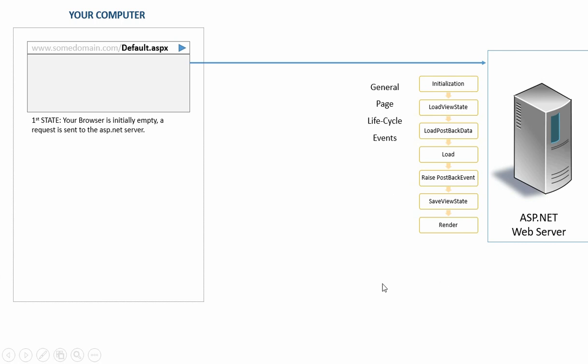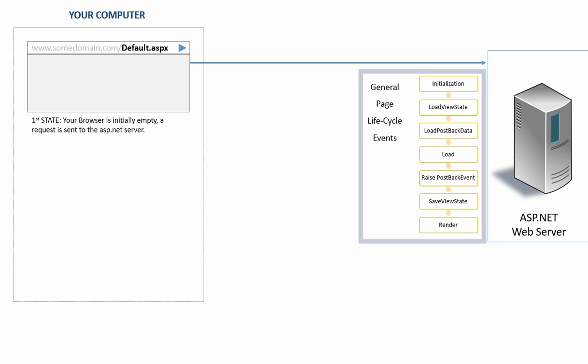Let's look into the details of how the ASP.NET server processes this request and creates the response back to the client. The ASP.NET server will go through seven stages to create the desired output for the user. In this video, I will briefly introduce these stages and will not cover too much detail. If you prefer to have an in-depth understanding, at the end of this video I will share some additional resources.